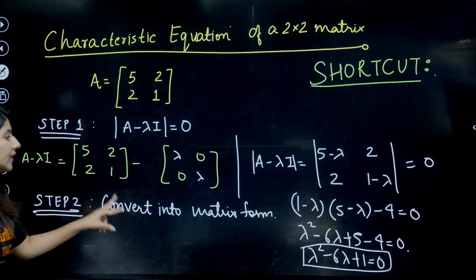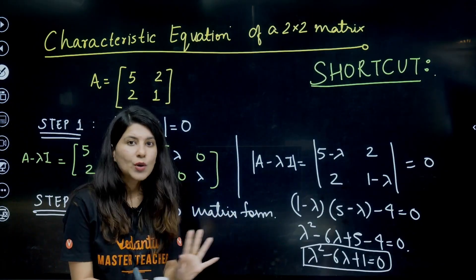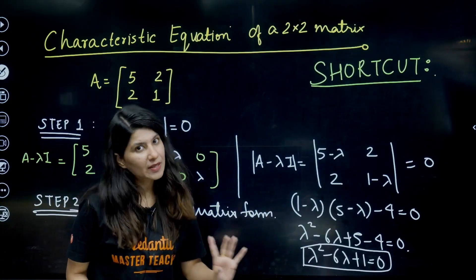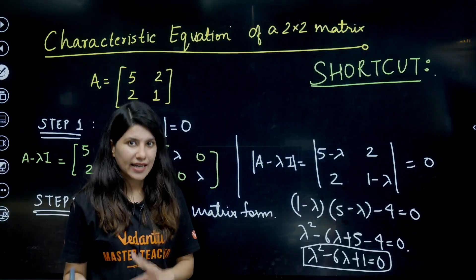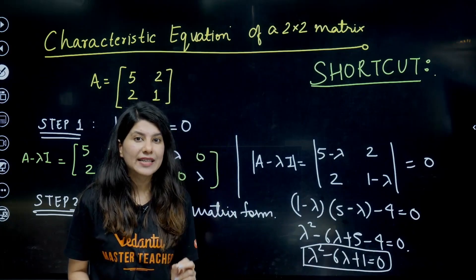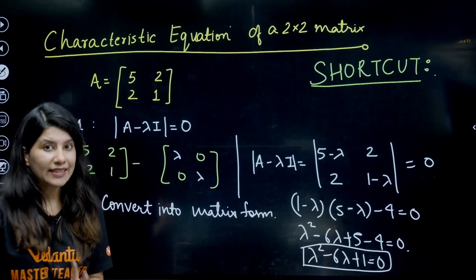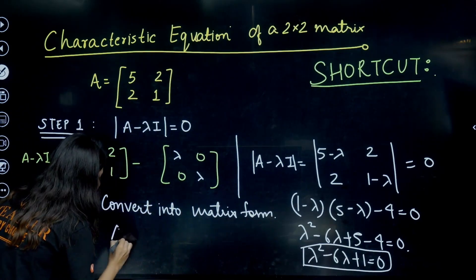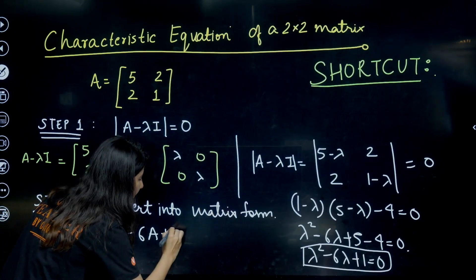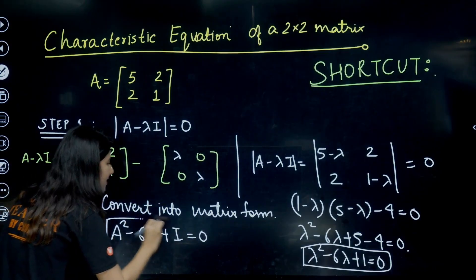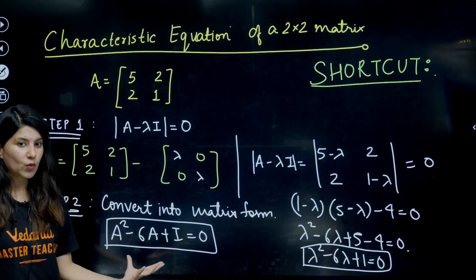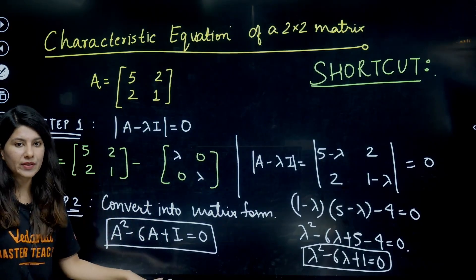Step 2: convert into matrix form. λ is replaced by matrix A, and the constant term is replaced by the identity matrix I. So the equation becomes A² − 6A + I = 0. This is your matrix equation, also called the characteristic equation.